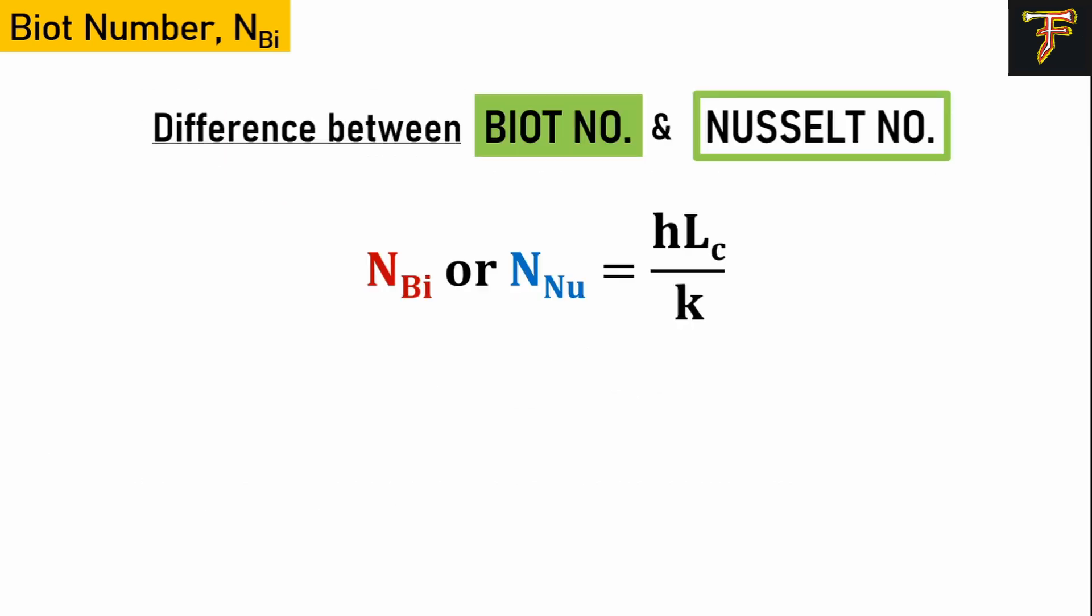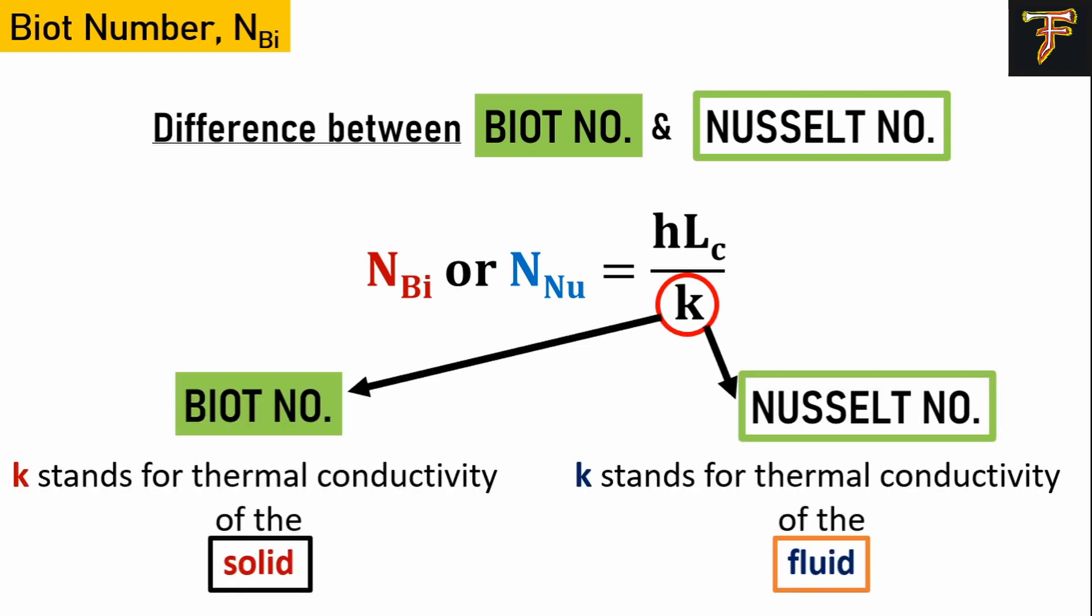Now let's get into the difference between the Biot number and the Nusselt number. If you look into the definition, both are given by h×Lc/k, but the k here for Biot number stands for thermal conductivity of solids like a metallic solid ball, whereas in the case of Nusselt number, k is the thermal conductivity of fluids. If you want to understand Nusselt number in detail, you can visit the link in the top right corner of this video.